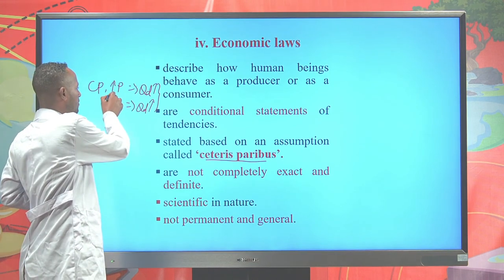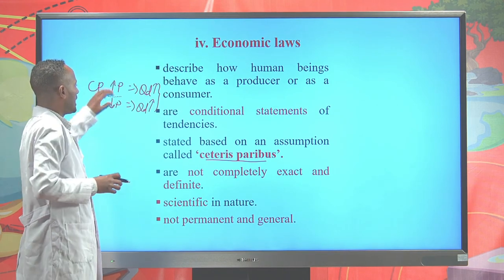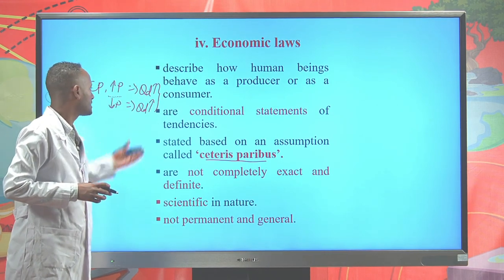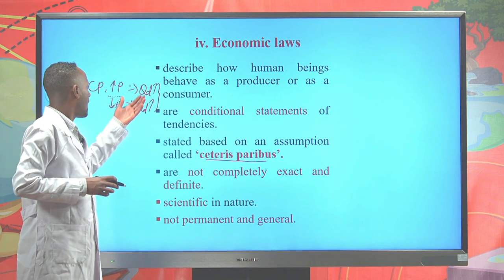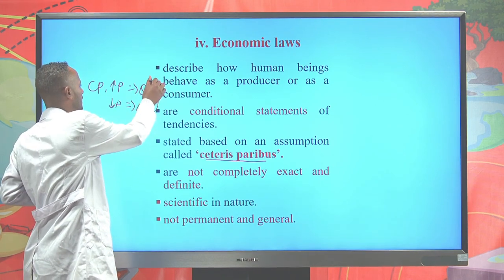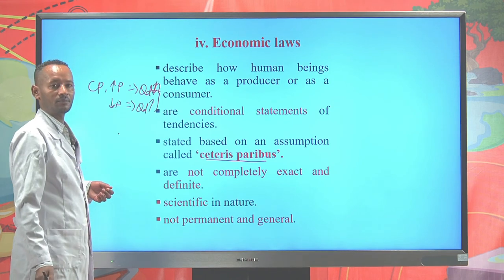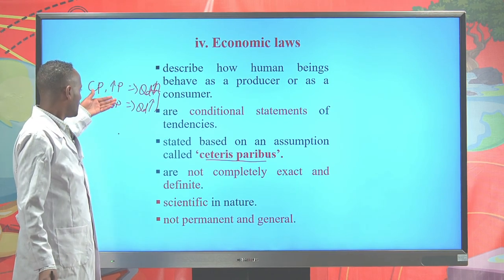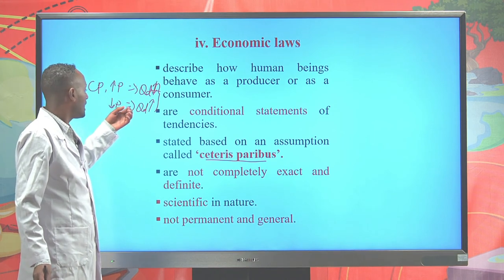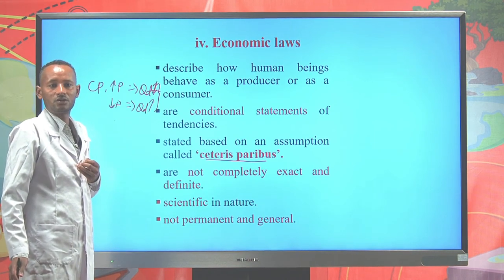For example, from the law of demand: an increase in the price of a commodity is the cause, and a decline in quantity demanded is the effect. Conversely, a decline in price is the cause, and an increase in quantity demanded is the effect. This economic law involves a cause-and-effect relationship, so we consider economic laws scientific in nature.